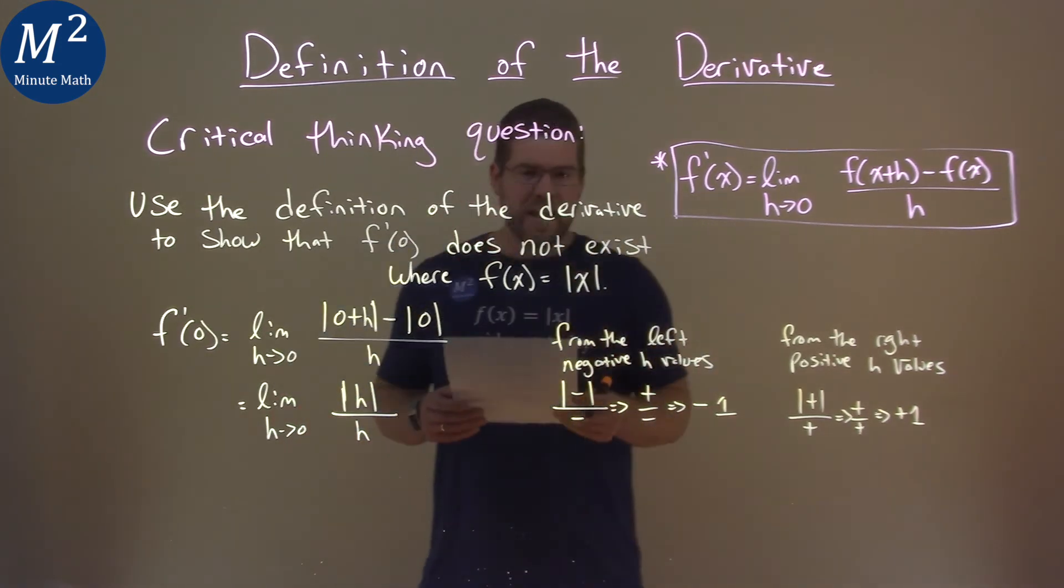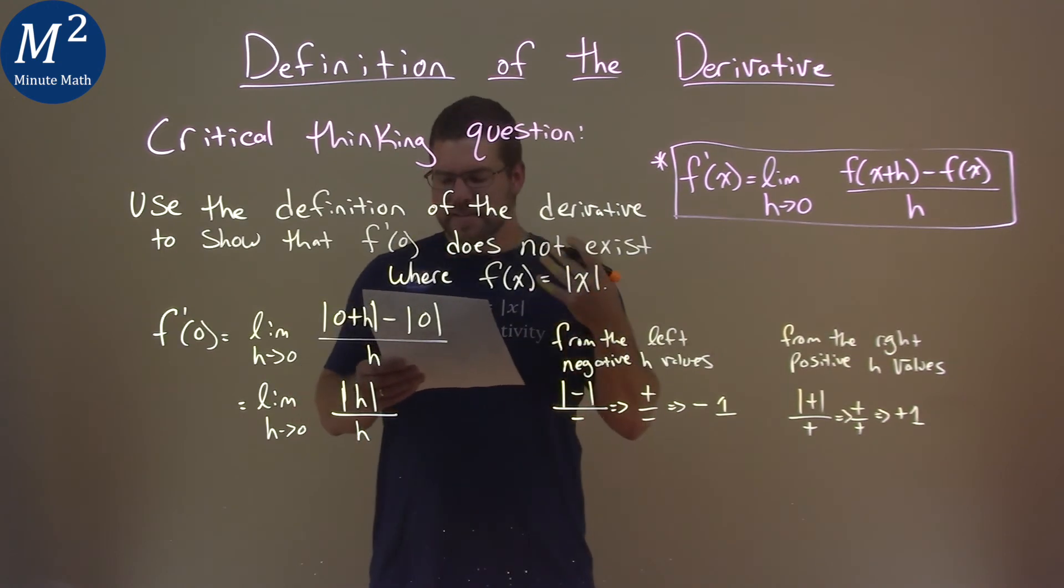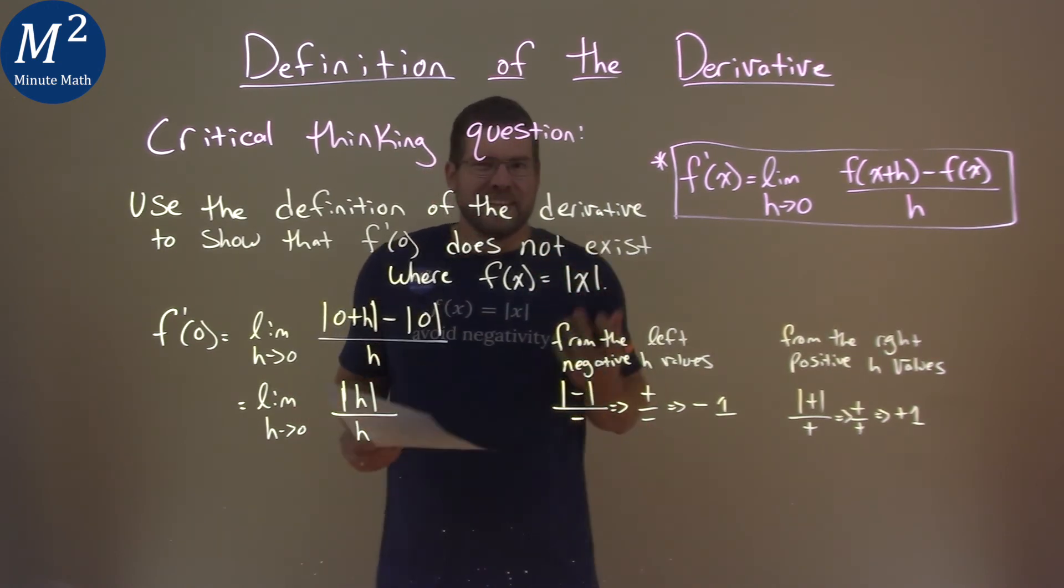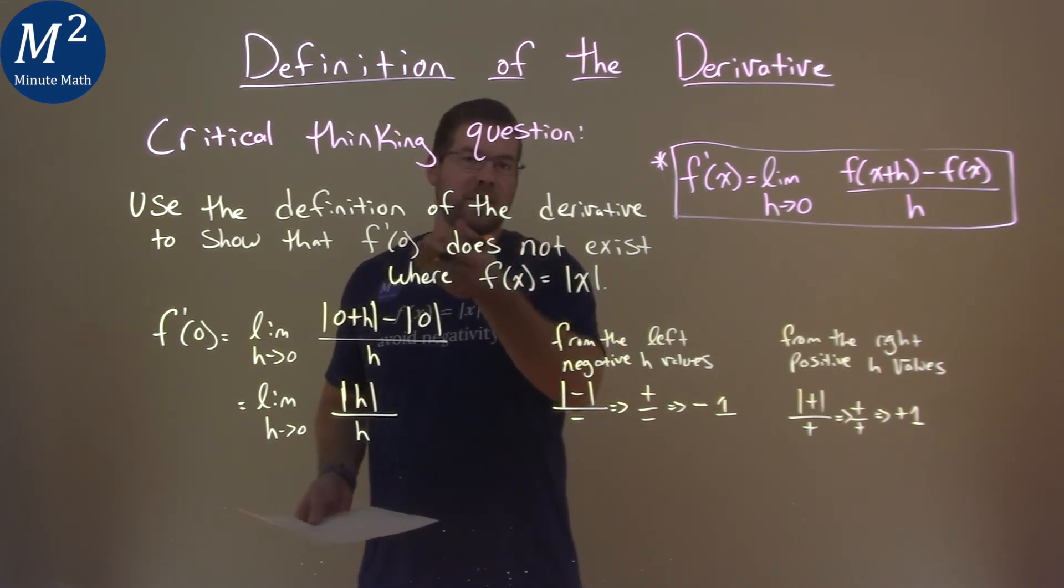And so notice here that the left and the right side of this limit don't approach the same exact value. And so what this tells us here is that the limit doesn't exist there, and so we don't have a derivative right there when x is zero.